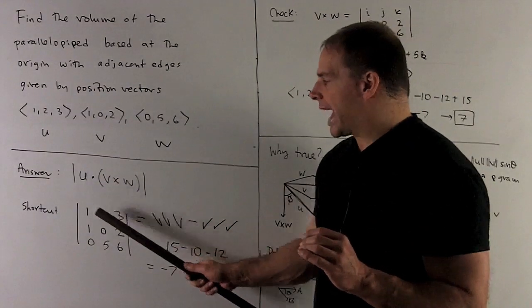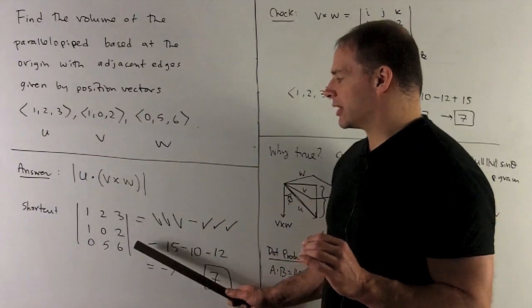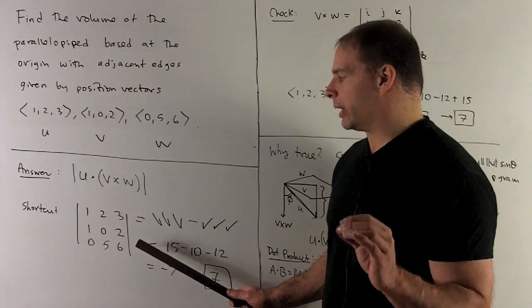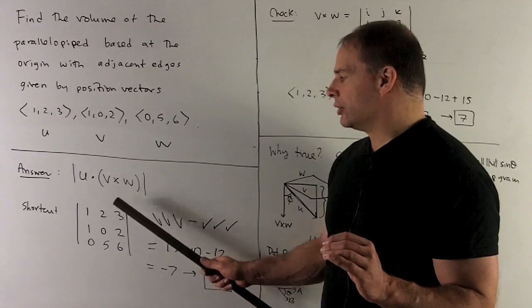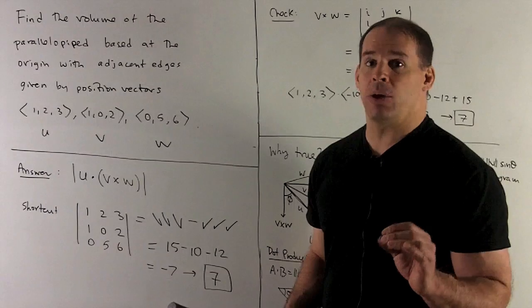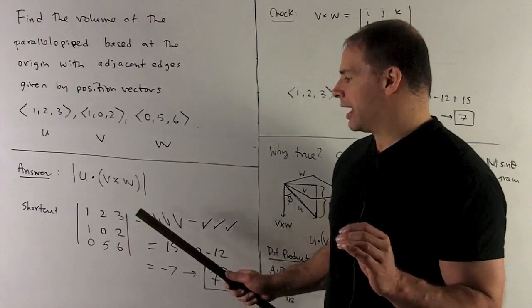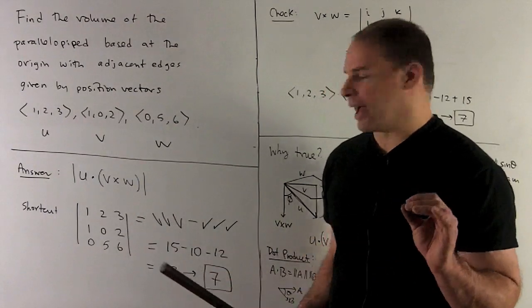Okay, so let's do this. So go down the first diagonal, 1, 0, 6. That's going to give me a 0. We're multiplying. Next diagonal, 2, 2, 0. We multiply. We get another 0. Then 3, 1, 5. I multiply. I get a 15.